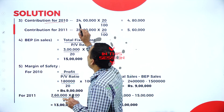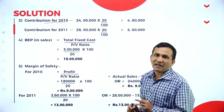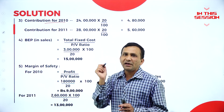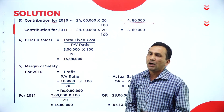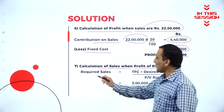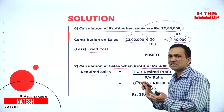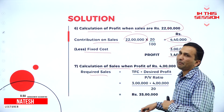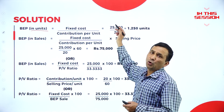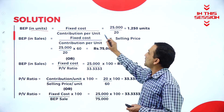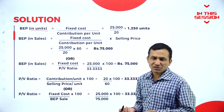Contribution for 2010: we know the sales value is 24 lakhs, so we need to apply the PV ratio of 20% — 4,80,000 is the contribution. For required sales, the formula is total fixed cost plus desired profit divided by PV ratio. The fixed cost value we know is 25,000; the contribution per unit was calculated with the help of the marginal cost statement.